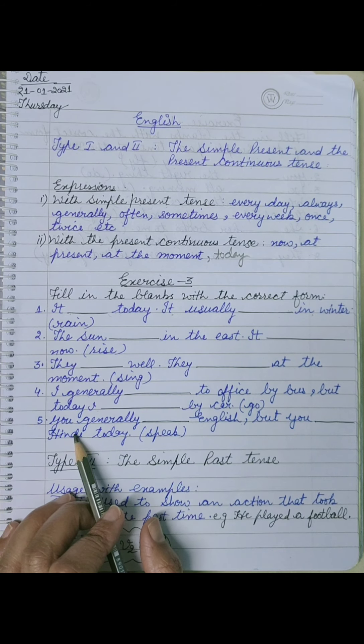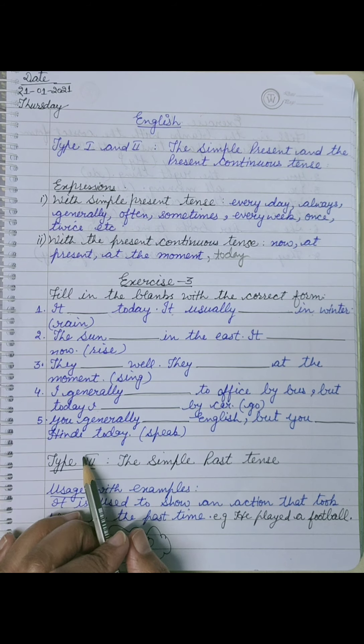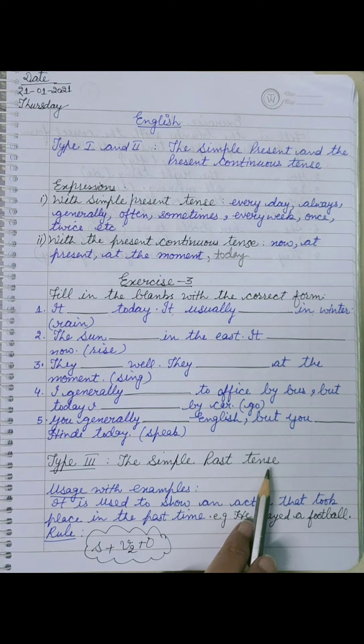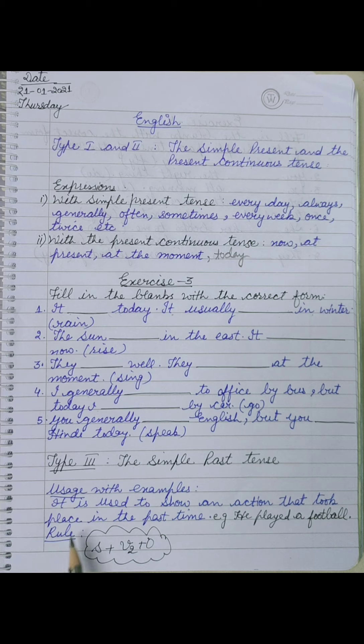Next, Type 2, the simple past tense. तो past क्या होता है, it is used to show an action that took place in the past time, वो action जो पहले past में हो चुका है.